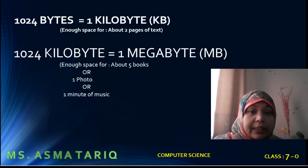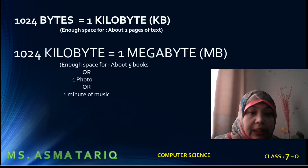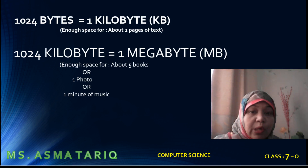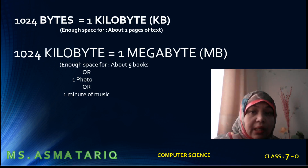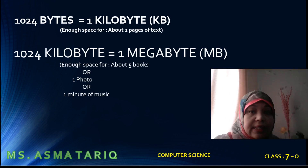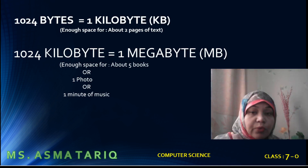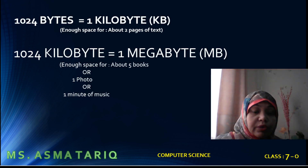1024 bytes equals 1 kilobyte or KB. This is enough space for about two pages of text stored in computer memory. And 1024 kilobytes is equal to 1 megabyte (MB). This is enough space for about five books, one photograph, or one minute of music to store.